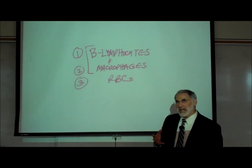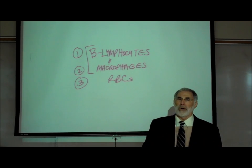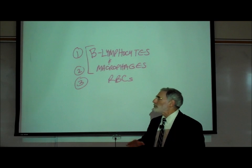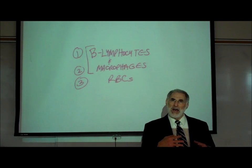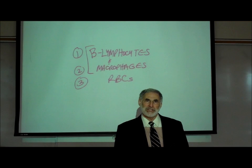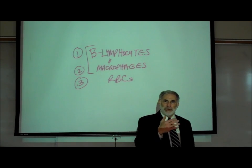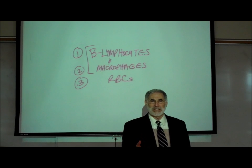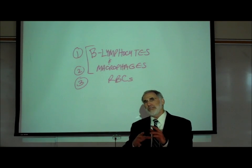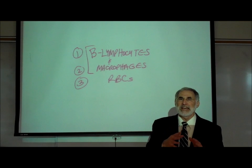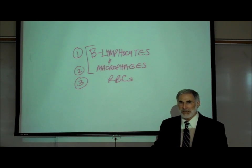The third type of cell in our body that doesn't have the usual markers are red blood cells. Red blood cells have a unique set of glycoprotein markers related to blood typing. Blood type A, blood type B, and so on are the names of the identity markers found on the outer surface of red blood cells.